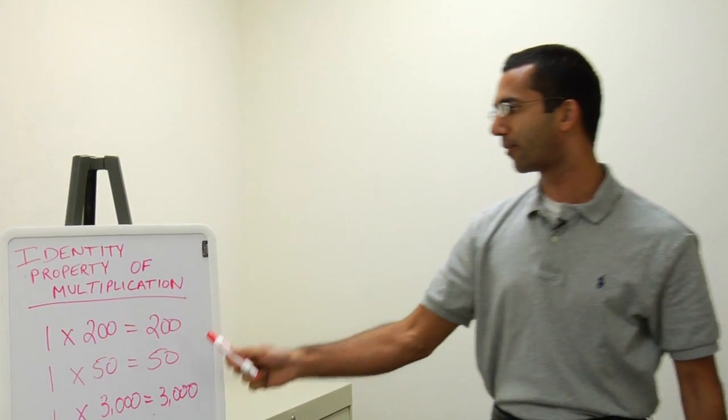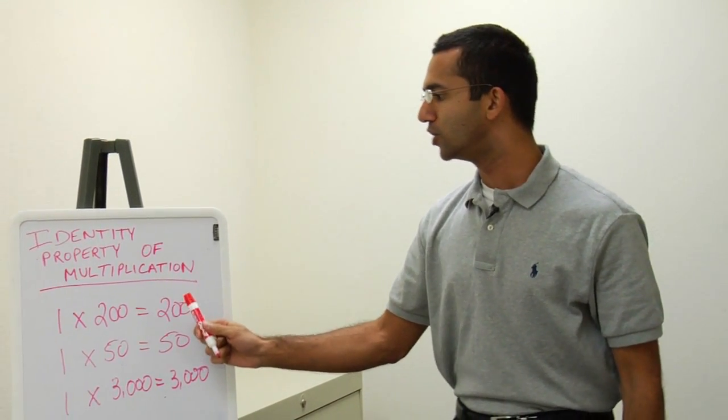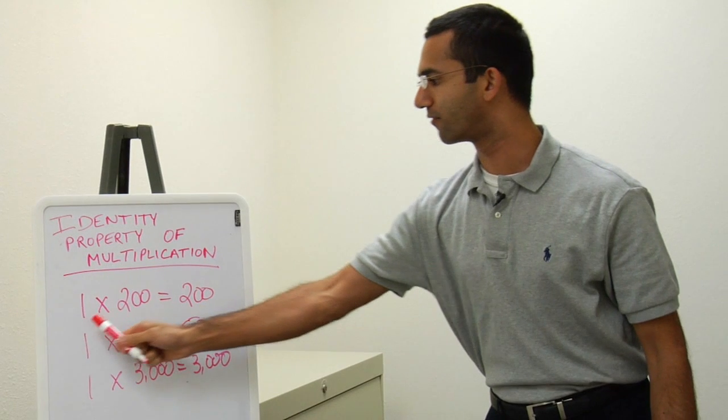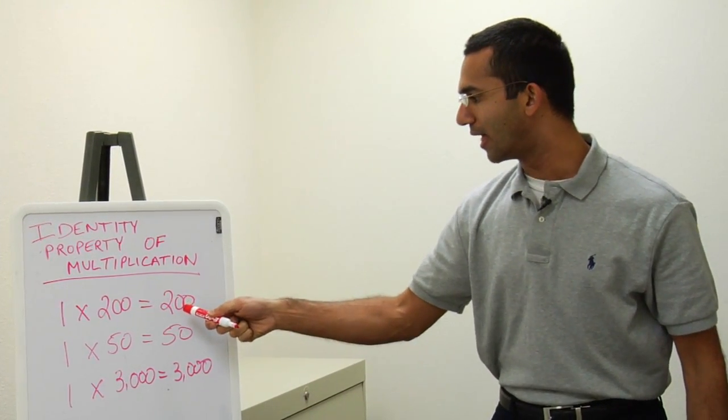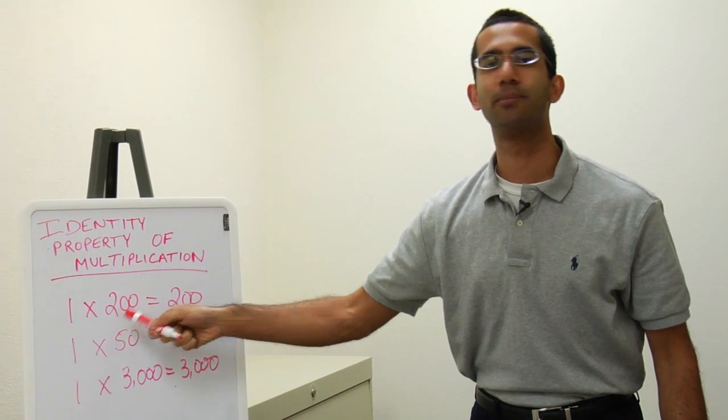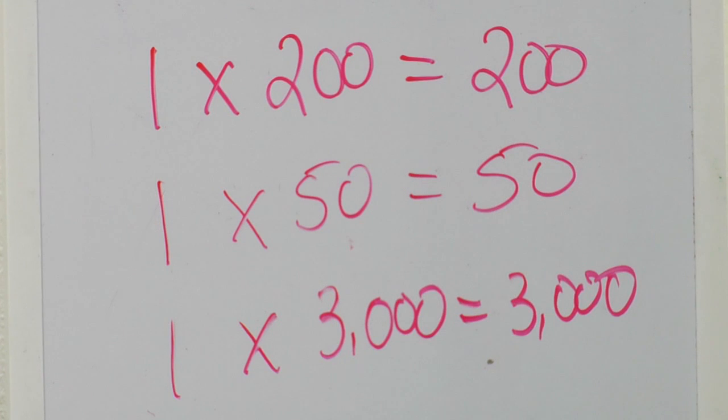So we see here from the identity property of multiplication that any time you figure out the product of one and a number, it will always equal that number that you multiplied one with, or that you wanted to find the product of.